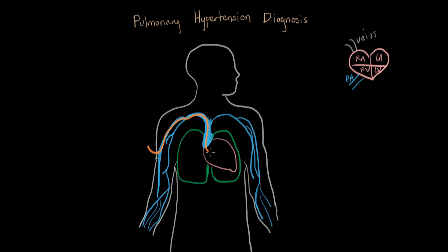The superior vena cava basically goes right into the right atrium. Now this catheter is designed specifically to measure pressure, and we can see the pressure in the right atrium, in the right ventricle, and in the pulmonary artery.